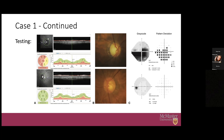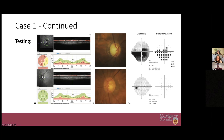Just to orient yourself on the visual field: you can see your blind spot, and just know you're looking from the patient's perspective — black areas are areas they're not seeing, white areas they're seeing well, and gray is in between. There are more details about grayscale and pattern deviation, but you don't need to worry about all that right now as a student.